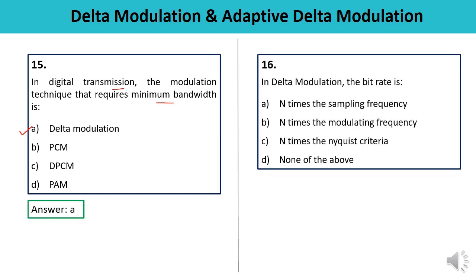Question 16: In Delta Modulation, the bit rate is — N times the sampling frequency, N times the modulating frequency, N times the Nyquist criteria, or none of the above? In Delta Modulation, the bit rate is N times the sampling frequency, denoted as N × Fs. So the answer is A.